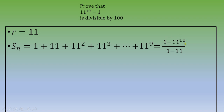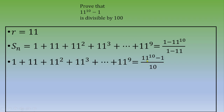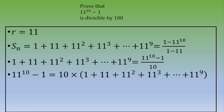In this exercise we have 11 to the power of 10 minus 1, which is the opposite sign of what we derived. So we switch signs: the denominator 1 minus 11 becomes 11 minus 1, which is 10. We end up with 11 to the power of 10 minus 1 equal to 10 times (1 plus 11 plus 11 squared plus 11 cubed, all the way up to 11 to the power of 9).